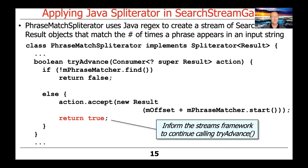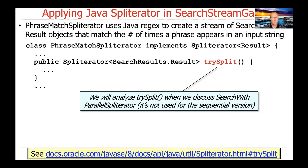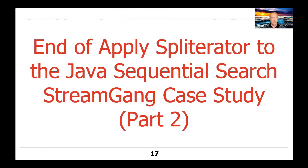So remember, tryAdvance is kind of a combination of hasNext and next in Java's Iterator, putting both those capabilities together in a single method called tryAdvance instead of having hasNext and next separately. trySplit is what's used to partition the data up into chunks — we're not going to talk about that now. We'll discuss trySplit when we cover the search with parallel Spliterator variant of the search stream gang case study. It's not used for the sequential version at all — just a no-op — but when we start doing parallel Spliterators, trySplit is used to break the input up into chunks. That's the end of our overview of Spliterators as used in the sequential version of the search stream gang case study.